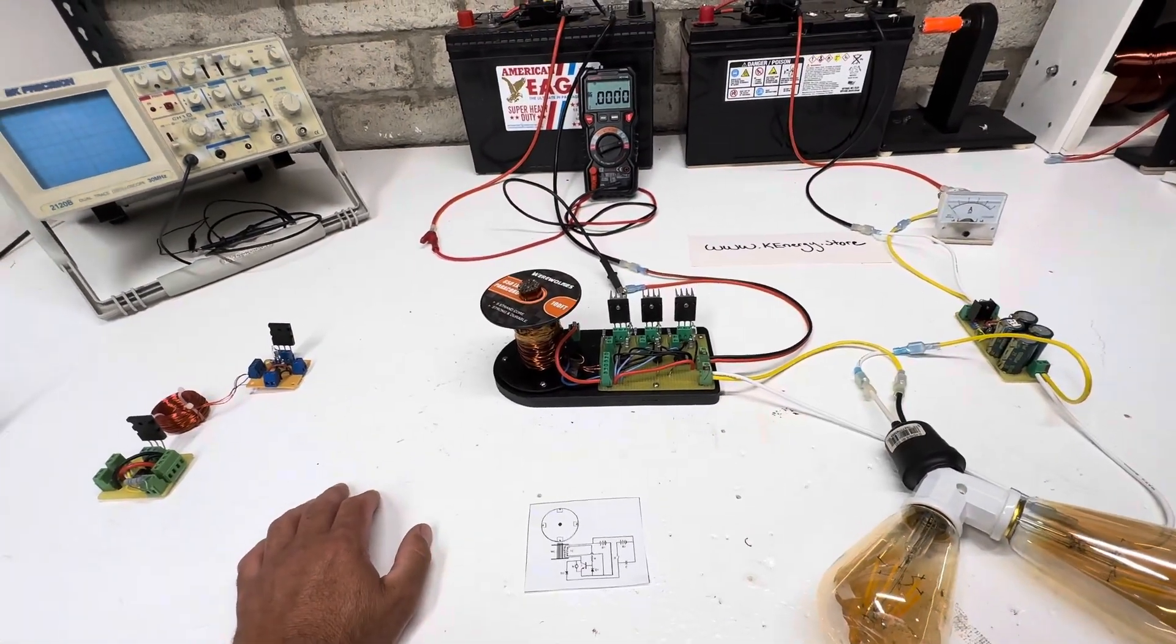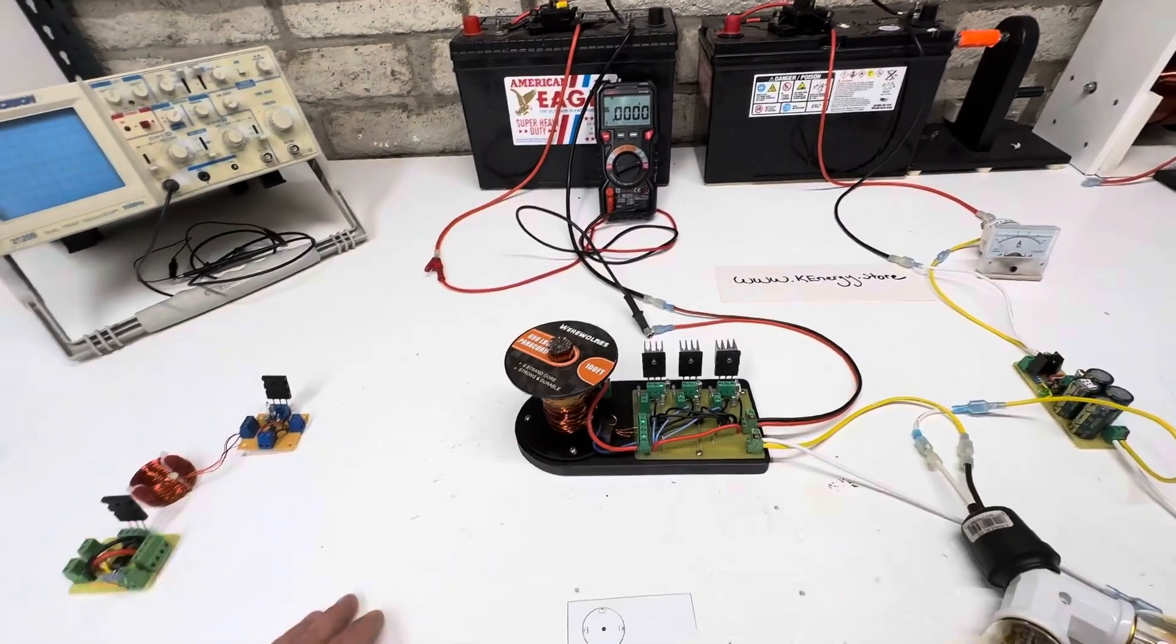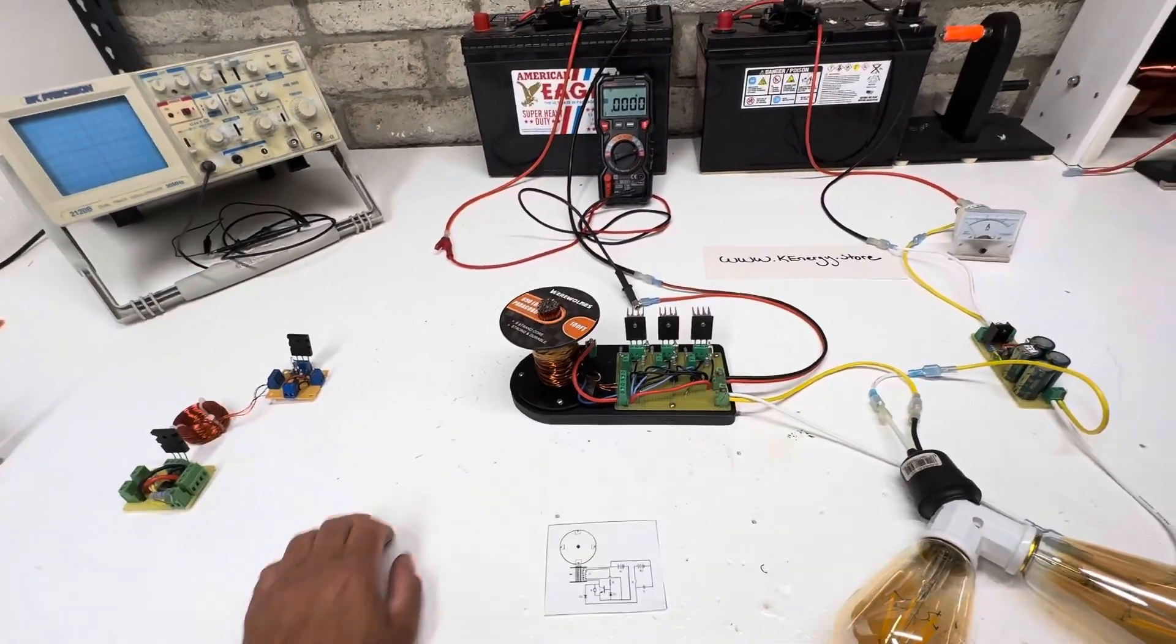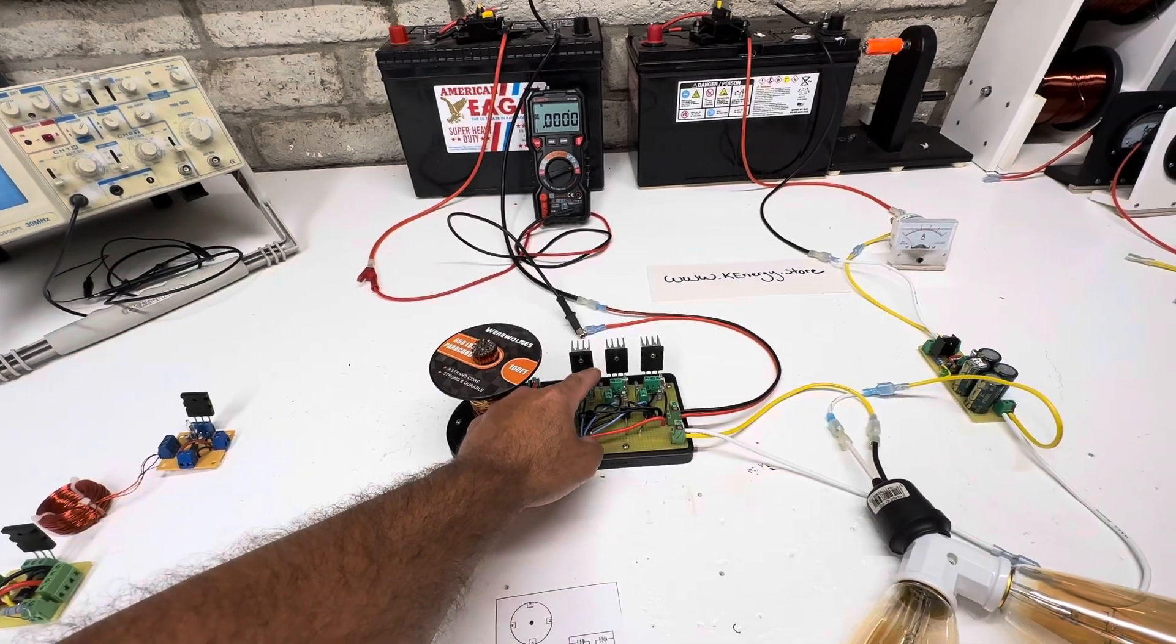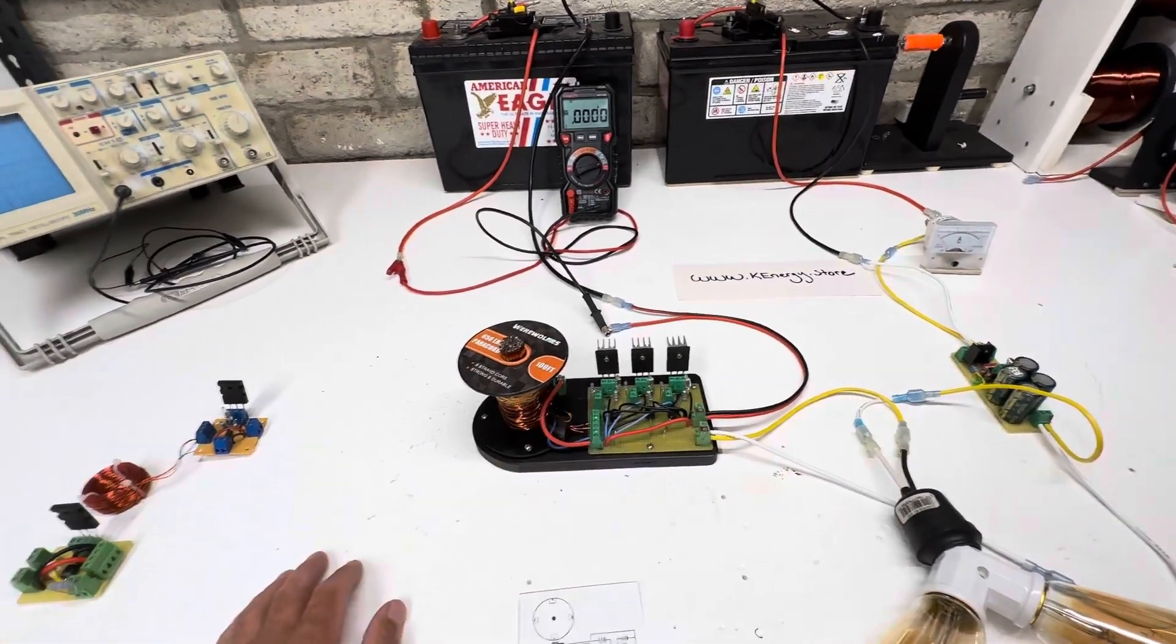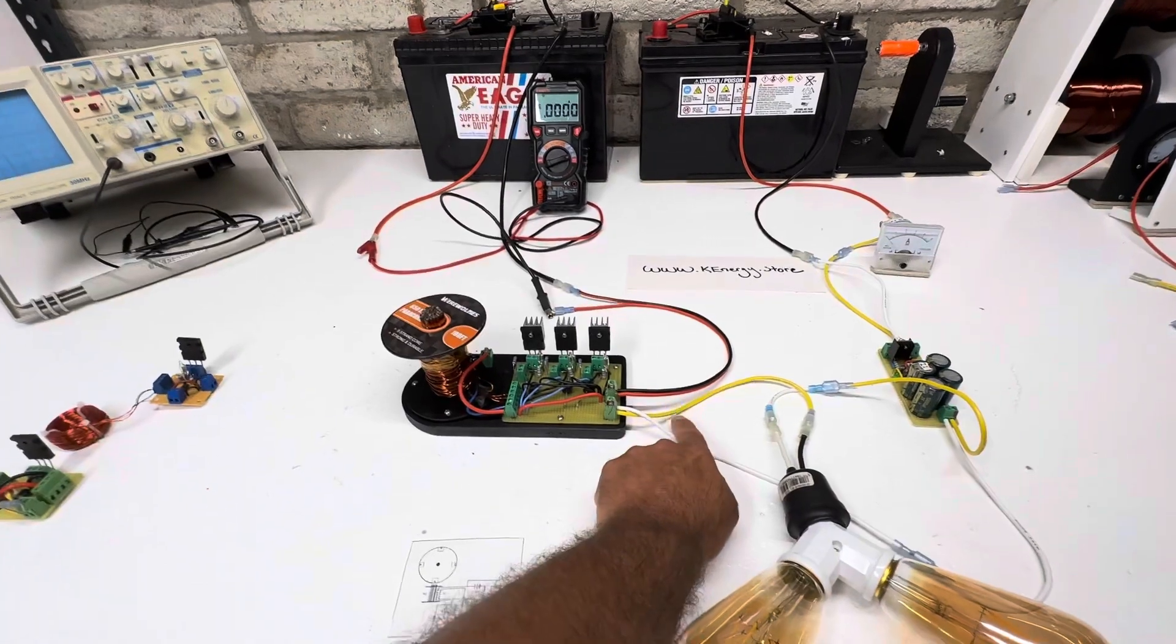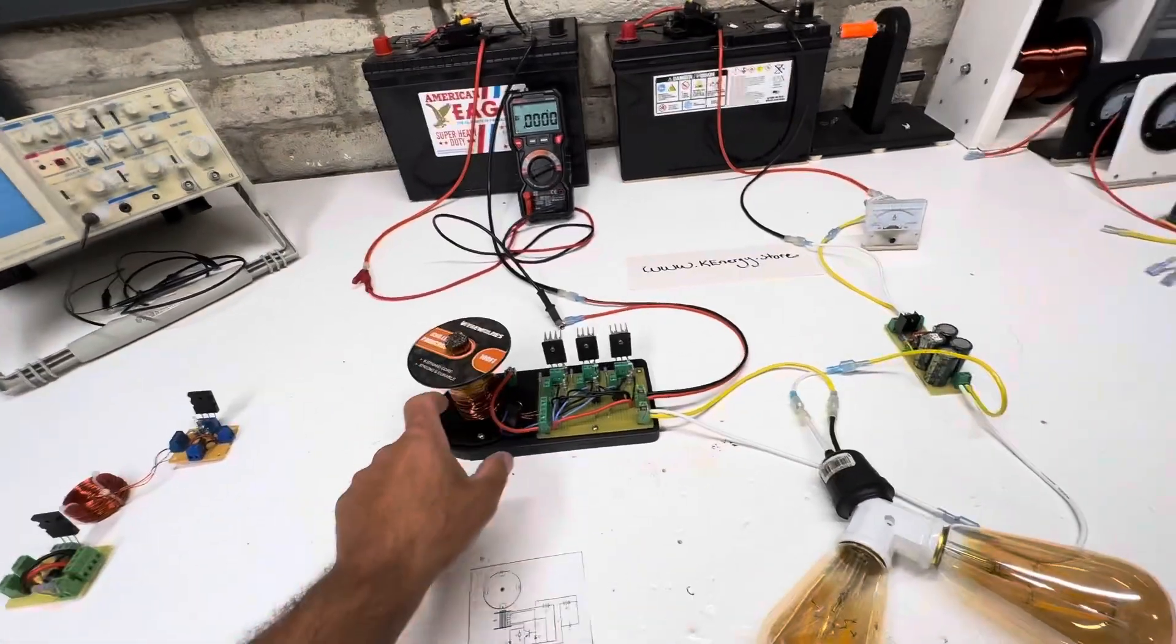Right now this is set up with two kilohm resistors and then we have little neon lights here to help get rid of the excess energy if for some reason this isn't plugged in. So as we come back through here, just as Bedini does...